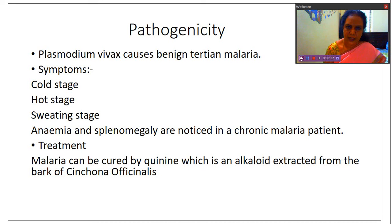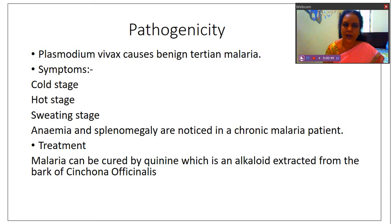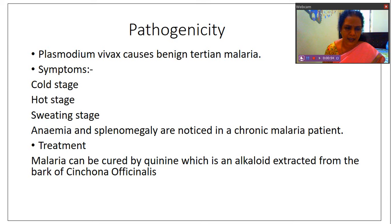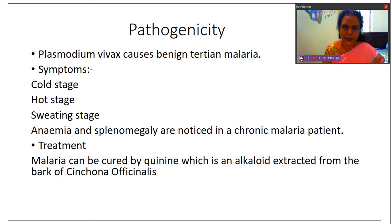During malaria, three stages occur. The first is the cold stage, then the hot stage, and then the sweating stage. In the cold stage we get shivering; in the hot stage we get fever and headache; and in the sweating stage we get profuse sweating. These three stages — cold stage with chills and shivering, hot stage with fever and headache, and sweating stage — will repeat.